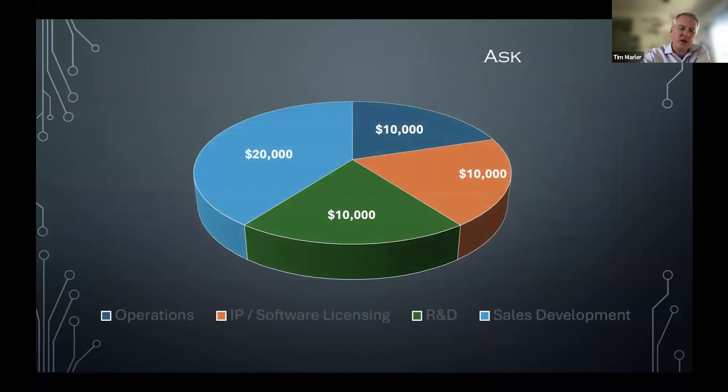The initial ask, initial step towards that $100,000 would look something like this. The ops would be covering basic operations. IP development covers some licensing of supporting software that we use. R&D would focus on reliability analysis capabilities that we have. And sales would focus on web page update, perhaps some third-party support, perhaps some branding updates.